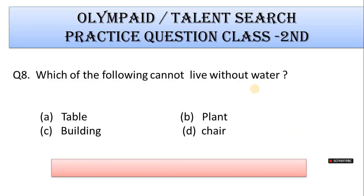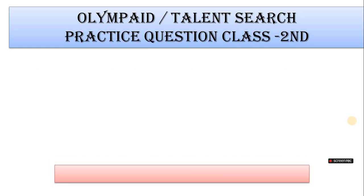Question number 8: Which of the following cannot live without water? A. Table, B. Plant, C. Building, D. Chair. Correct answer is Plant.